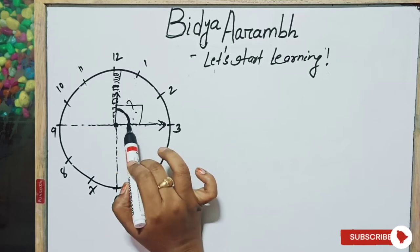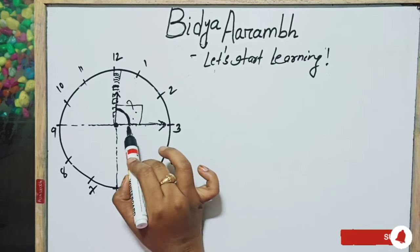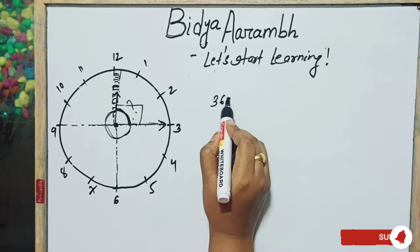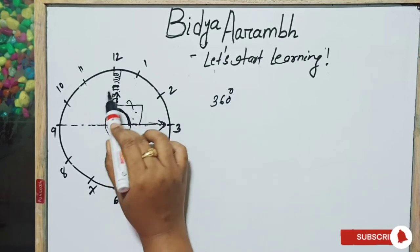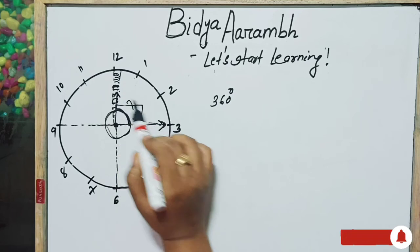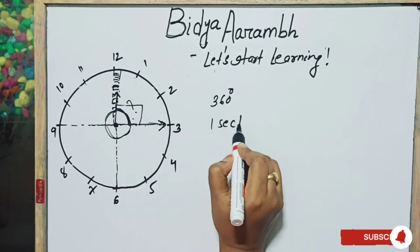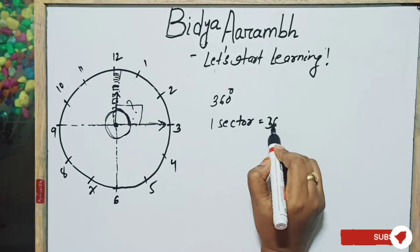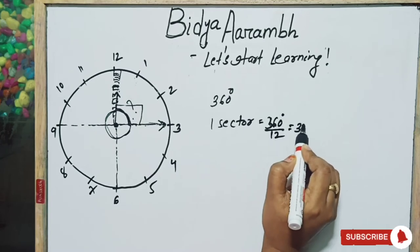So in one revolution, this is one complete angle, that is 360 degrees. As here 12 sectors are there, 1 sector is equal to 360 divided by 12, that is 30 degrees.